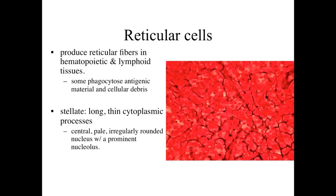The next type of resident cell we're going to look at are going to be the reticular connective tissue cells. Reticular cells are going to be involved with producing reticular fibers — that fine, three-dimensional meshwork, that jungle gym-type system that we talked about between hematopoietic (the blood-forming tissues) or lymphoid (the immune system organs). They basically are going to be forming that three-dimensional matrix.